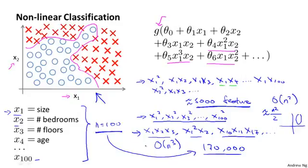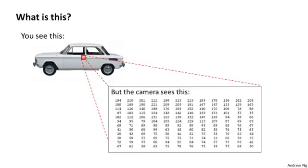For many machine learning problems, n will be pretty large. Here's an example. Let's consider the problem of computer vision. And suppose you want to use machine learning to train a classifier to examine an image and tell us whether or not it is the image is a car. Many people wonder why computer vision could be difficult. When you and I look at this picture, it's so obvious what this is. You wonder how is it that the learning algorithm could possibly fail to know what this picture is. To understand why computer vision is hard, let's zoom into a small part of the image, like that area where the little red rectangle is. It turns out that where you and I see a car, the computer sees that. What it sees is this matrix, which is a grid of pixel intensity values that tells us the brightness of each pixel in the image. So the computer vision problem is to look at this matrix of pixel intensity values and tell us that these numbers represent the door handle of a car.